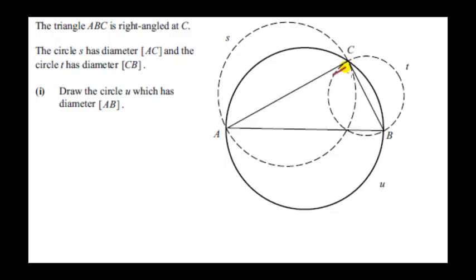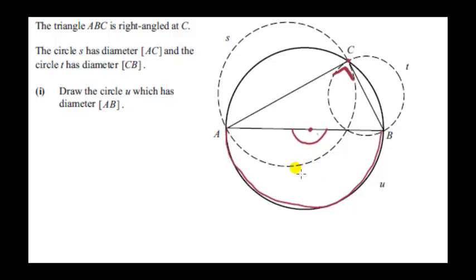Triangle ABC is right-angled at C. Circle S has diameter AC, and circle T has diameter CB. For the circle with diameter AB, we find the midpoint of AB. Because this angle is 90 degrees, our circle will pass through point C — that's because the angle in a semicircle is 90 degrees. This follows from the theorem that the angle at the center is twice the angle at the circle, where both angles stand on the same arc; the arc is a semicircle, so the angle at the center is a straight angle, and the angle at the circle is half of that, which is 90.